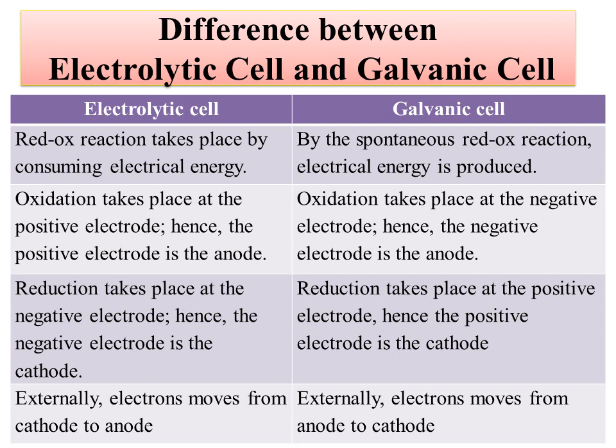In an electrolytic cell, the redox reaction takes place by consuming electrical energy. In a galvanic cell, it is spontaneous, so the electrical energy is produced. Oxidation takes place at the negative electrode, called the anode, and reduction takes place at the positive electrode, called the cathode. Externally, electrons move from anode to cathode.